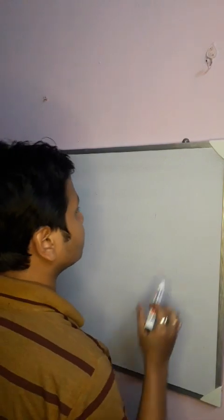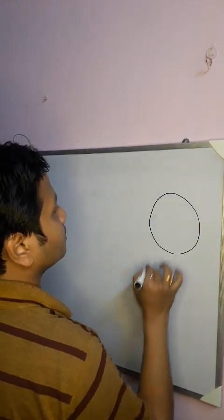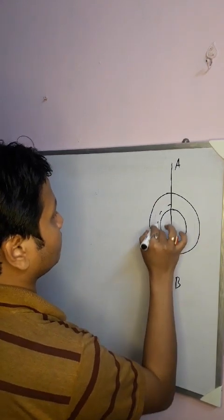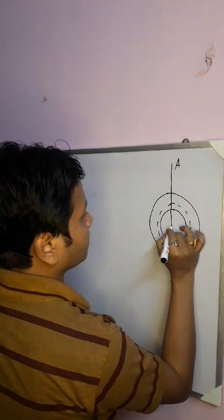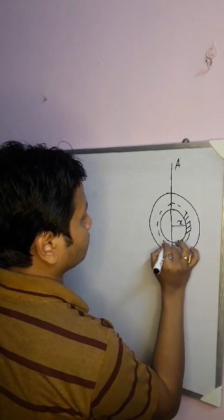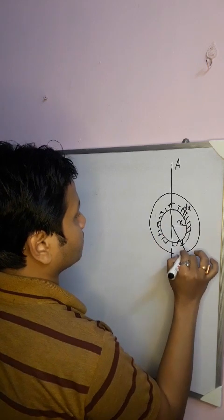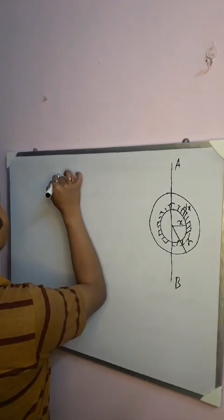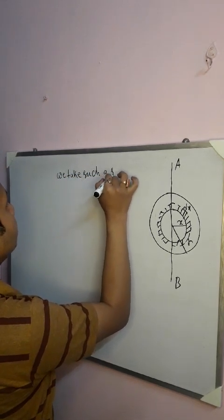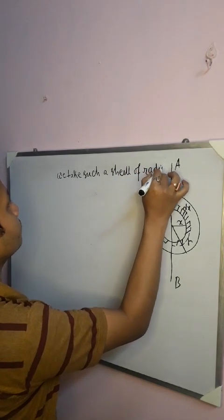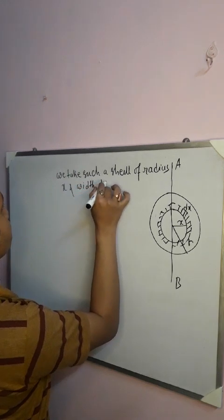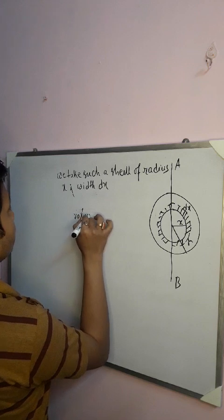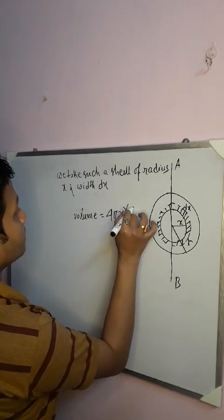Now let us calculate the moment of inertia for a solid sphere about its diameter AB. A solid sphere consists of a large number of concentric spherical shells. We take such a shell of radius x and width dx; the radius of the sphere is R. The volume of such a shell is 4πx² dx.